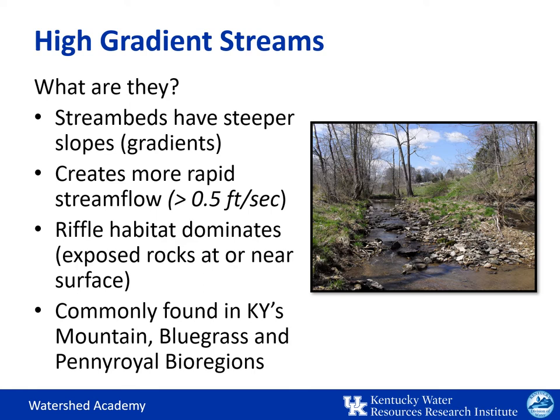High gradient streams have steeper slopes or gradients, which in turn causes more rapid stream flow and riffle habitat dominates — these are the exposed rocks at or near the surface. High gradient streams are commonly found in Kentucky's mountain, bluegrass, and pennyroyal bioregions.